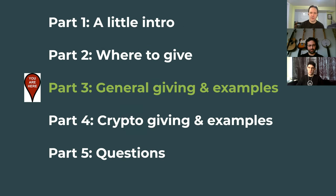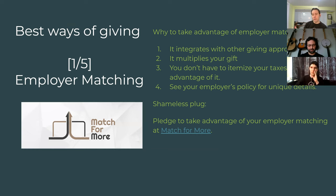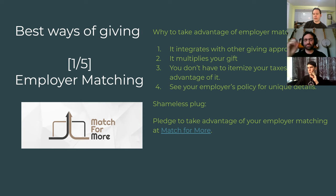Now the fun stuff — we're going to talk about technical aspects of giving with examples. One of the most effective ways of giving interfaces with many other techniques: employer matching. For instance, every.org earlier this year had matching up to $200 per charity. Even if you can't give in the most tax-efficient way, a one-to-one match is really awesome and you should generally be taking advantage of it and working to max it out.